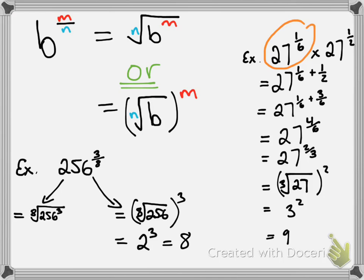If we had just evaluated those two terms individually and multiplied them, we would have had to approximate the answers, and when multiplied together we'd get something close to 9 but not exactly 9. But if we know how to use our exponent laws and deal with rational exponents in the form of m over n, we can get an exact answer. So this has just been a summary including a couple of examples of how to use the rational exponent laws. Hope it's helpful for you guys. Take care.